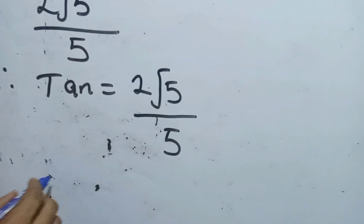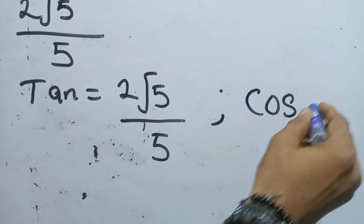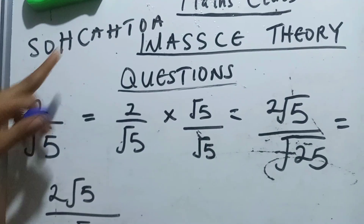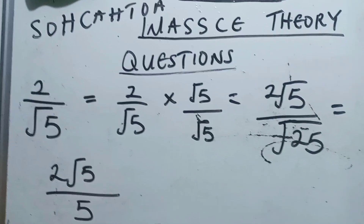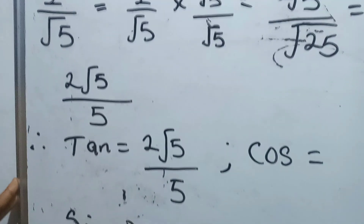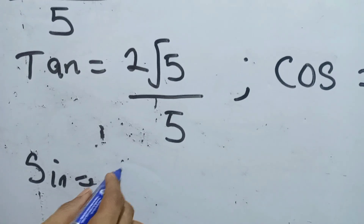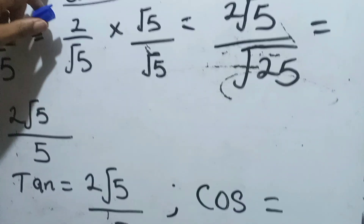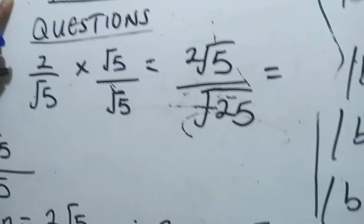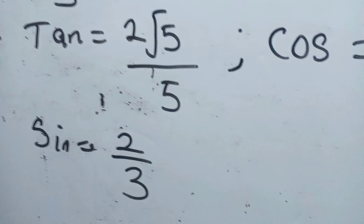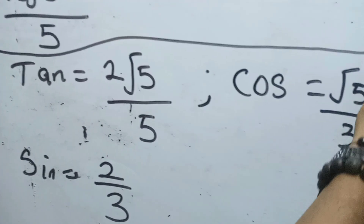Now let's find cos x. Cos is adjacent over hypotenuse. Our sign was opposite over hypotenuse — sin x was 2 over 3, so our opposite was 2 and hypotenuse was 3. Our cos x is adjacent over hypotenuse. Our adjacent is square root of 5 and our hypotenuse is 3. So cos x equals square root of 5 over 3.